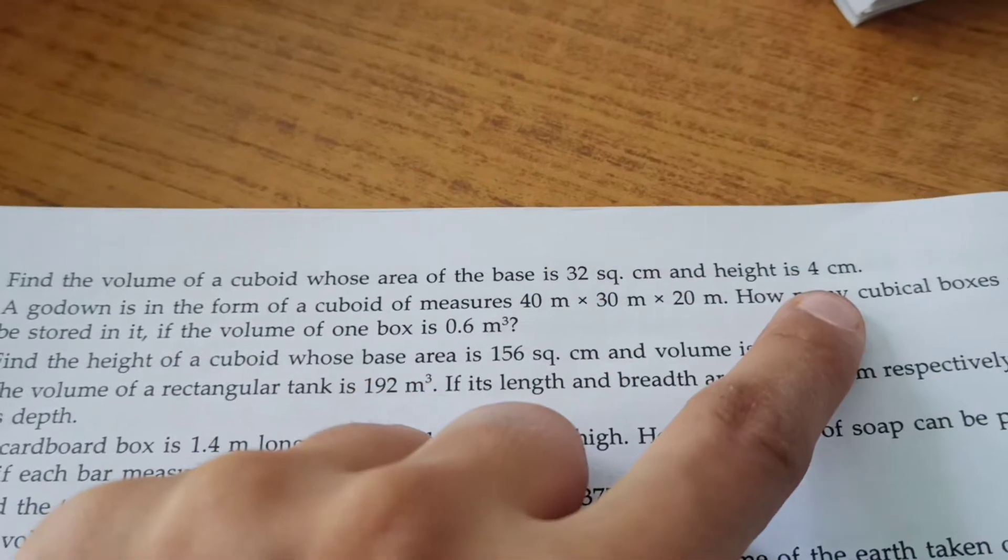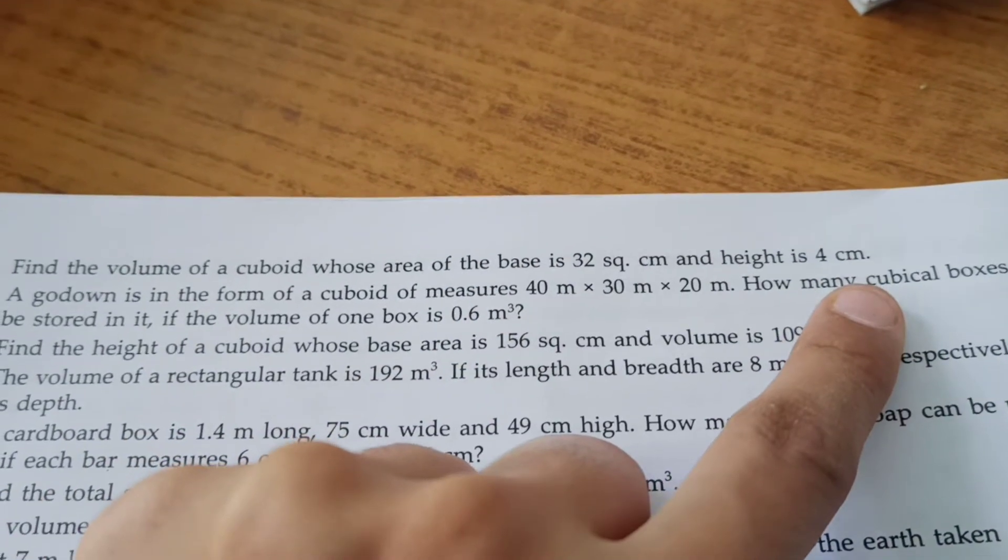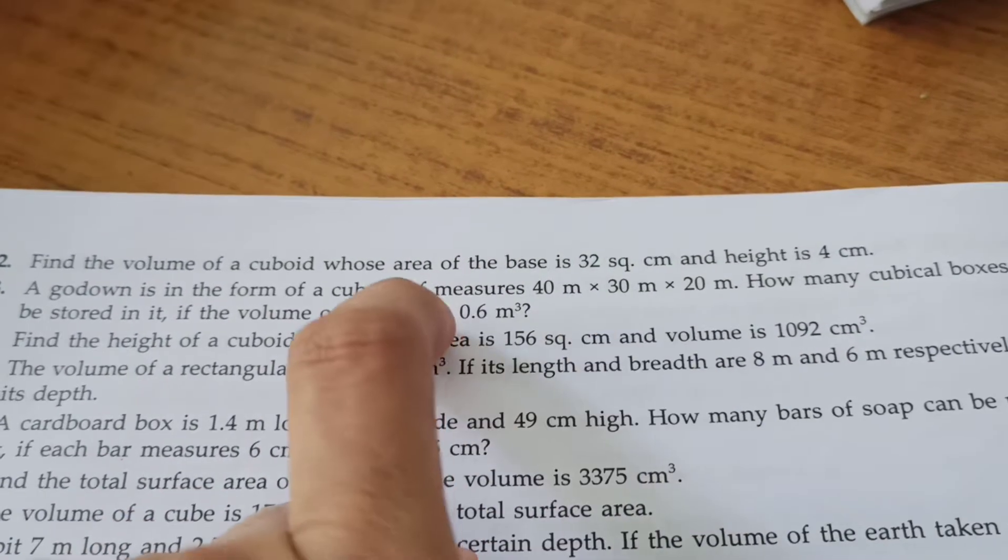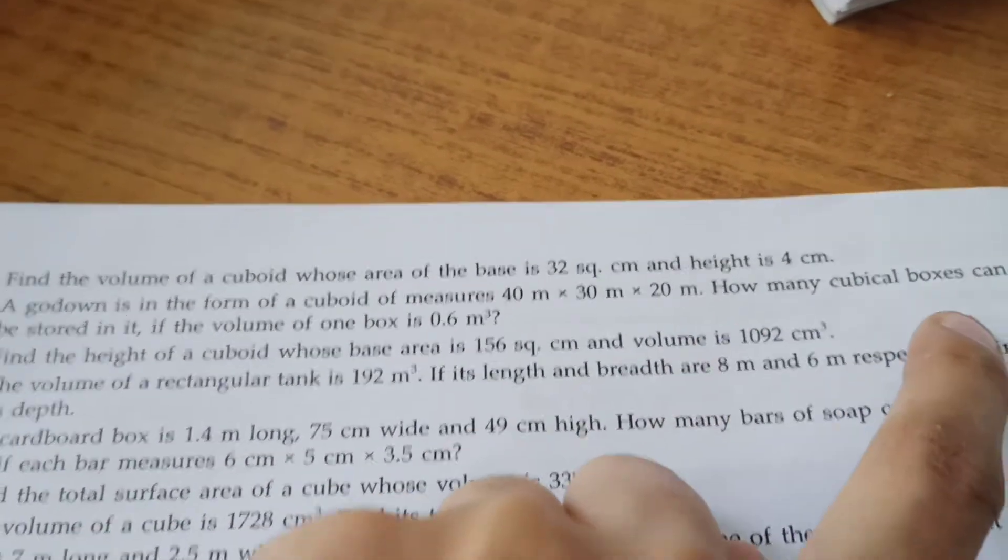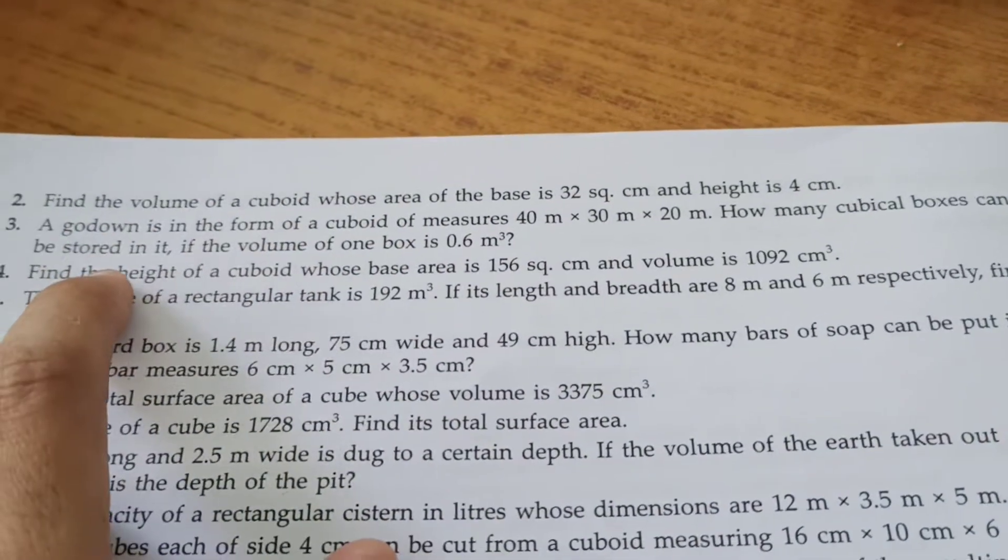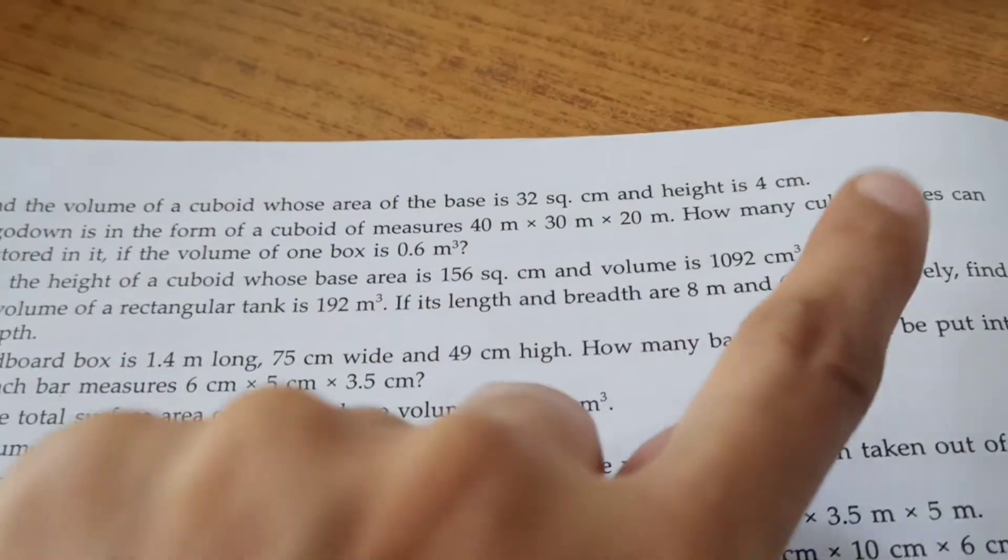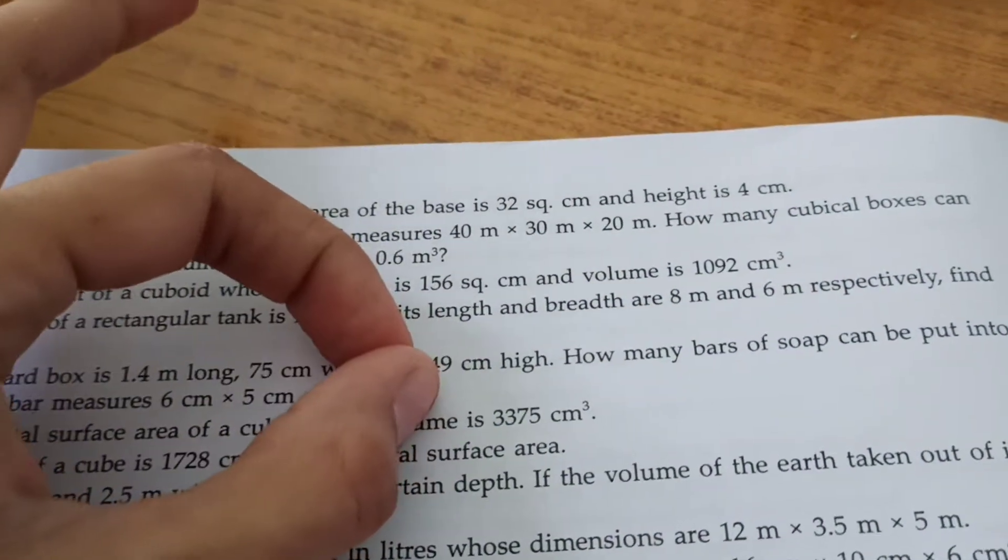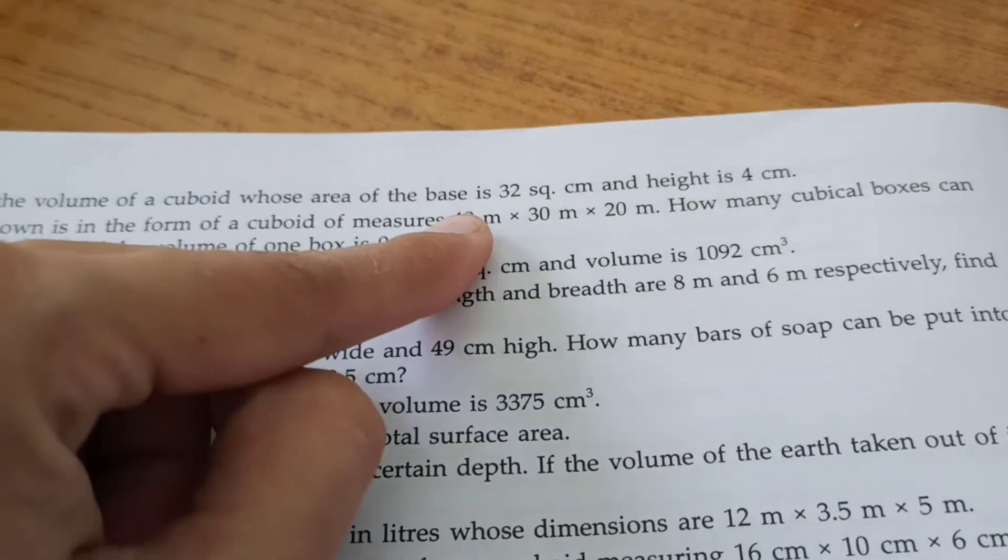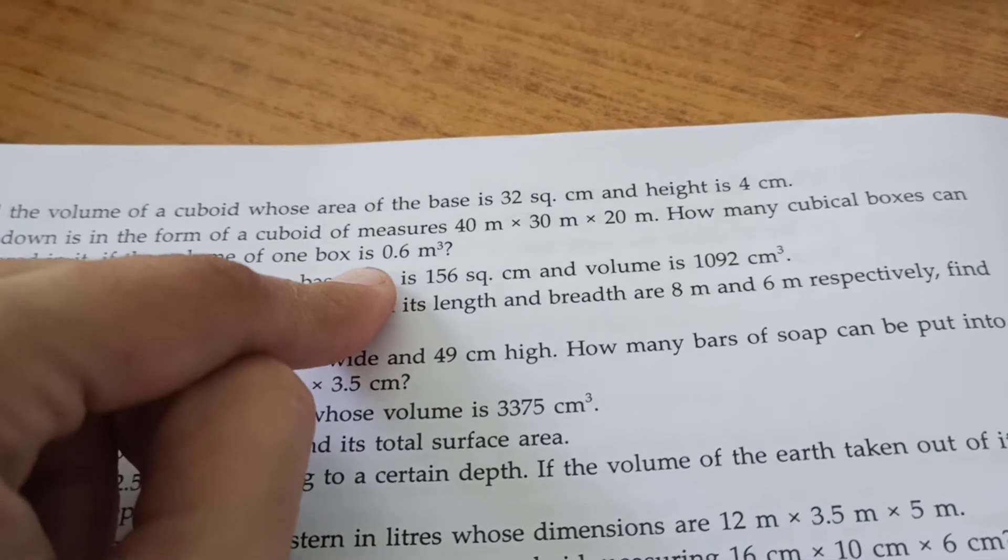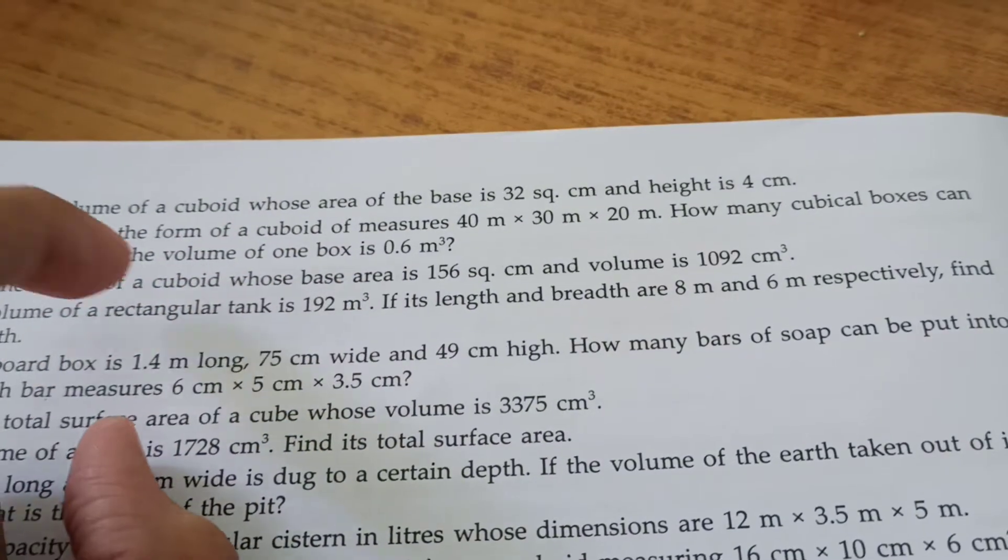Next, a godown is in the form of a cuboid of given measures. How many cubical boxes can be stored in it if the volume of one box is 0.6 meter cube? So the volume of one cubical box is given to us. Number of boxes equals volume of cuboid divided by volume of cubical box.